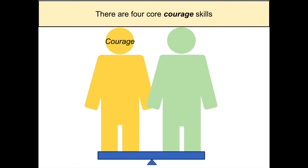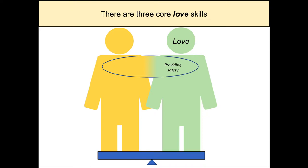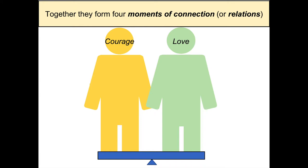When we get to courage, you're going to learn four core courage skills: the skill of showing yourself, then expressing yourself, then asking for things, and the final courage skill is called accepting and connecting. On the other side, there are three core love skills: the first is providing safety, the second we call validating, and the third is giving. Together, these four courage skills and three love skills form four moments of connection.